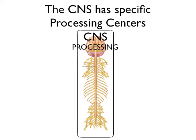Let me take you again through the entire central nervous system and look at it in a little more detail in terms of what's going on where. Most processing that occurs in the nervous system occurs in the central nervous system. This CNS has specific processing centers for any number of things going on within the human body.